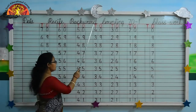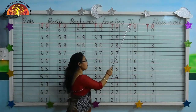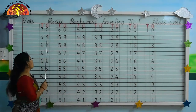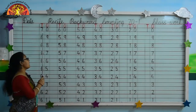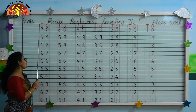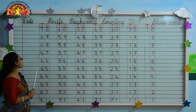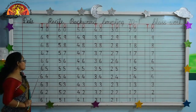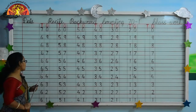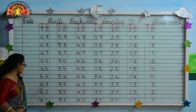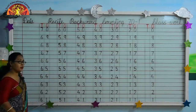Recite backward counting from 70 to 1. Kids, what is written here? 70, 69, 68, 67, 66, 65, 64, 63, 62, 61.